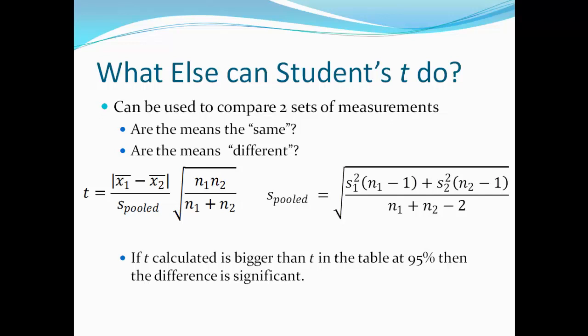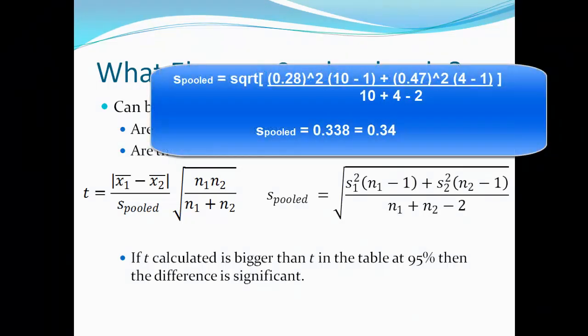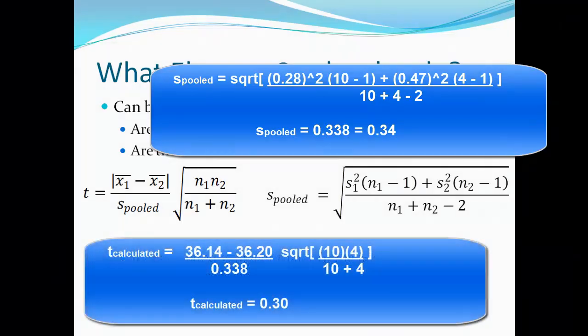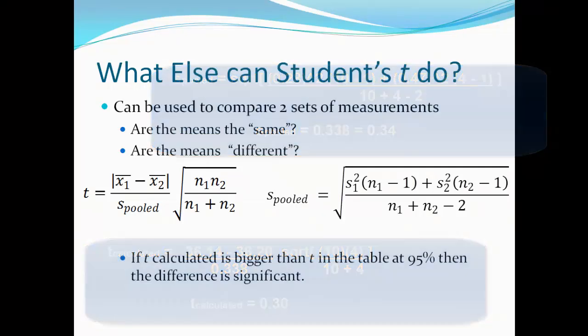So they ended up getting the square root for S pooled, square root of 0.28 squared, parentheses, 10 minus 1, plus 0.4 squared, parentheses, 4 minus 1, over 10 plus 4 minus 2. They multiplied all that out, and they got 0.338, which of course ended up being 0.34. And then they plugged that number into the t test equation, and they multiplied all that out, and they got 0.30.